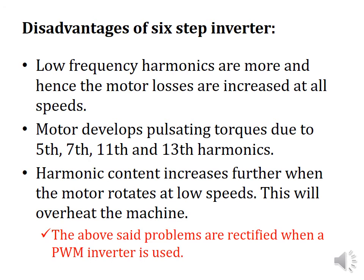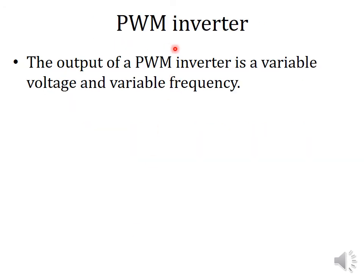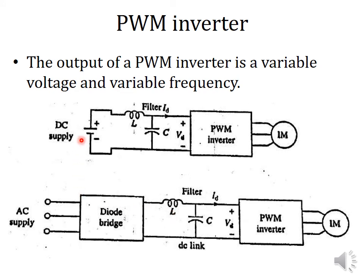To overcome these difficulties, we can use a PWM inverter. The output of a PWM inverter is variable voltage and variable frequency, meaning the PWM inverter is capable of controlling both voltage as well as frequency within the inverter itself. If the inverter has a fixed DC supply, it can be given directly to the PWM inverter, because the PWM inverter is capable of converting a fixed DC into variable DC voltage and variable frequency to provide the induction motor with V/F control.